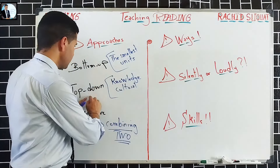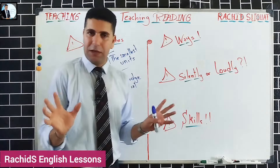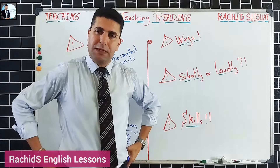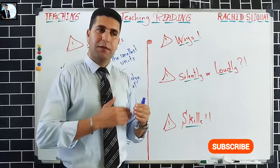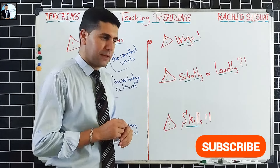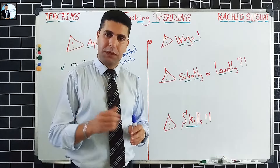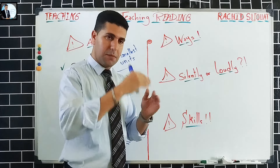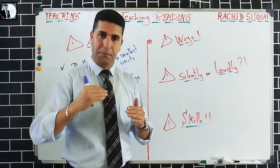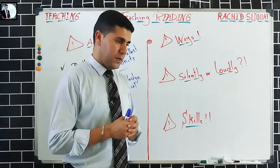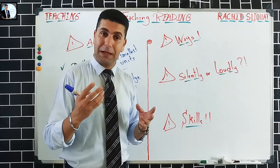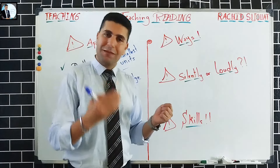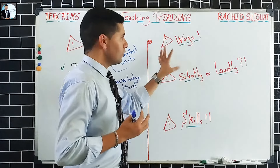Now let's talk about the ways of teaching reading. We can talk about different frameworks, for instance the jigsaw reading and reciprocal teaching. We can also talk about the pre-, while-, and post-reading framework as a way to teach reading. We can also talk about the SQ4R method, which we are going to discuss later. These are some of the ways to teach reading comprehension.